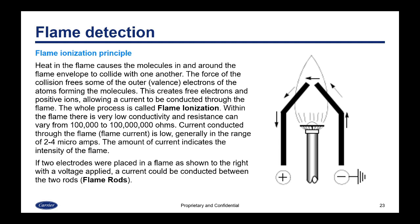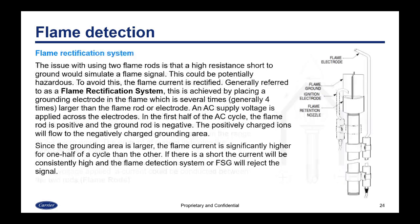If two electrodes were placed in a flame and a voltage was applied, a current could be conducted through the flame through the two flame rods. The issue with using two flame rods is that a high resistance short to ground — in other words, if you touch them to each other — would simulate a flame signal, which could be potentially hazardous.